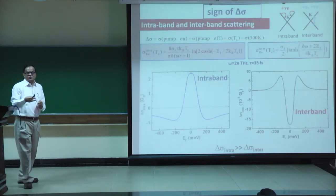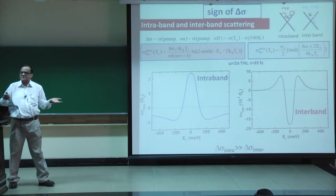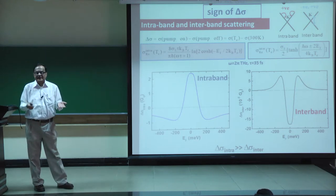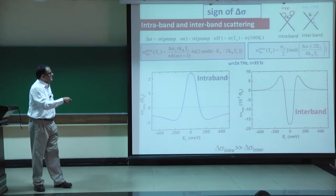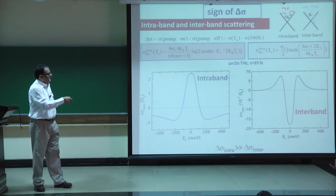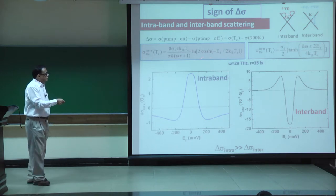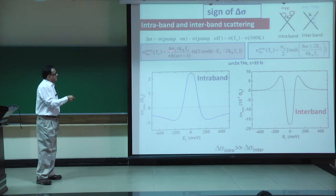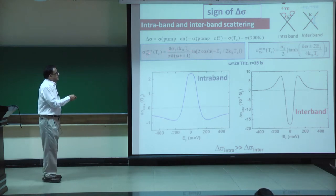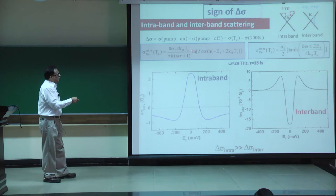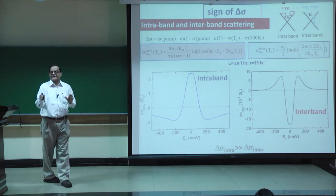Looking at the real part of conductivity in units of G₀ versus delay time: when the pump arrives it creates a change in conductivity that reaches quasi-equilibrium in about 1 picosecond, reaching −1.5 G₀ — a very large negative change. After this, carriers relax back to the lattice temperature over about 8 to 10 picoseconds. However, on nitrogen-doped graphene where the Fermi level is very close to the Dirac point, the conductivity change is positive. If we anneal the sample and push the Fermi level back to −180 or −200 meV, we recover the negative spectrum.